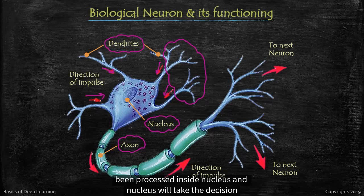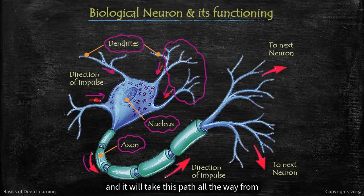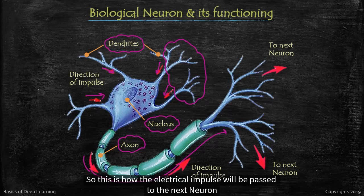Nucleus will take the decision whether to pass on that electrical signal or impulse to the next neuron. If it is to be passed, then it has been passed through axon and it will take this path all the way from one neuron to the next neurons. So this is how the electrical impulse will be passed to the next neuron.